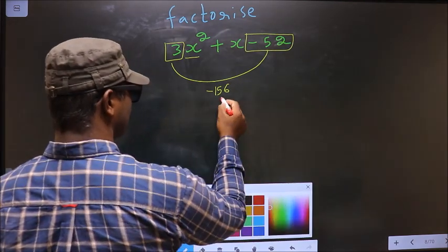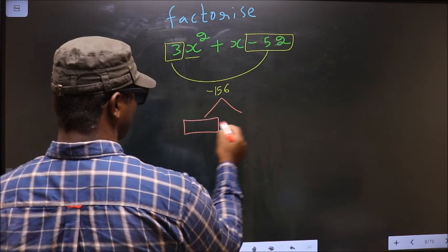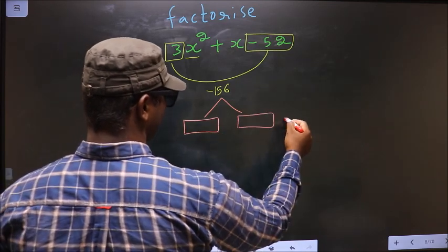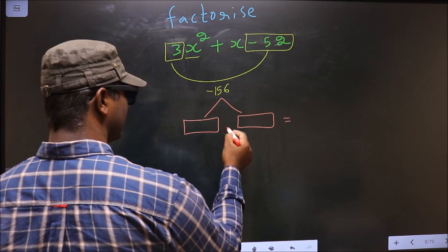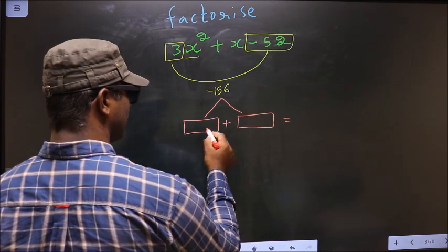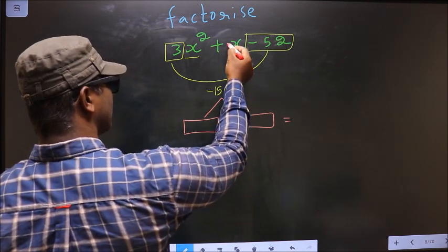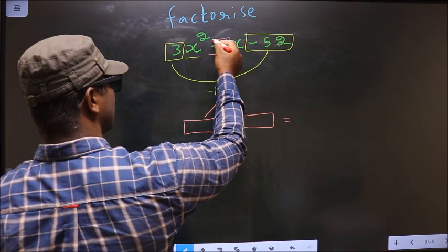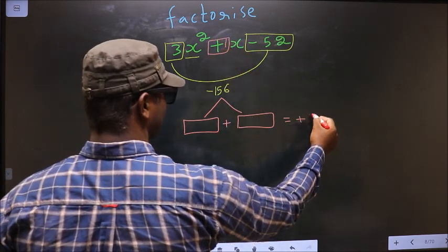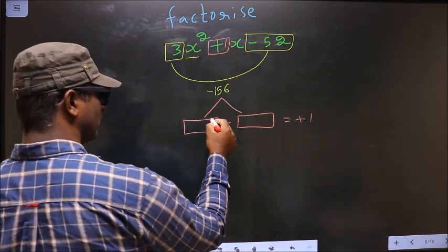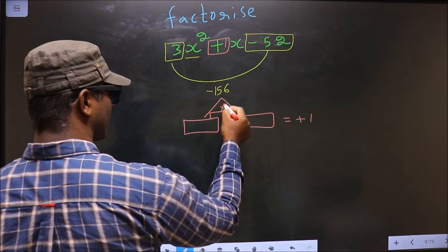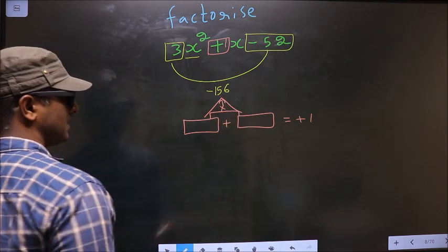Now we should look out for 2 numbers such that when we add these 2 numbers we should get the middle coefficient, that is +1, and also when multiplied you should get -156.